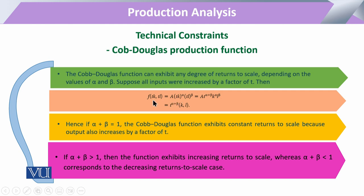Using the returns to scale formula, if inputs are multiplied by a scalar value T, we expect the output to be multiplied by the same scalar. Accordingly, alpha plus beta summed as the power of the function: if alpha plus beta equals 1, it is constant returns to scale; if greater than 1, increasing returns to scale; if less than 1, decreasing returns to scale.